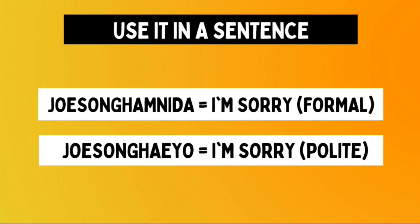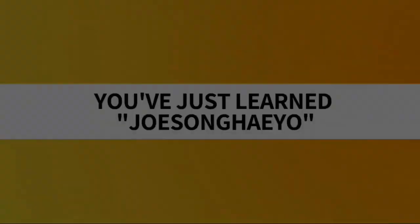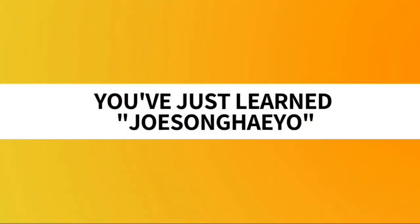Joesonghaemnida is used in formal settings, like the corporate setting or when talking to people in authority. On the other hand, joesonghaeyo is a not-so-formal way of saying 'I'm sorry,' but it is still polite. It can be used with people older than us or with strangers. So joesonghaemnida is the formal form, and joesonghaeyo is the informal but polite form. And with that, you've just learned joesonghaeyo.